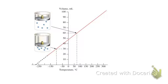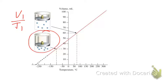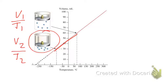Looking at initial conditions V1 and T1 on the graph: as the volume gets smaller to V2 over T2, we notice that the temperature also gets smaller. And as the volume goes up, so does the temperature, showing a clear direct proportional relationship. That is Charles' Law.